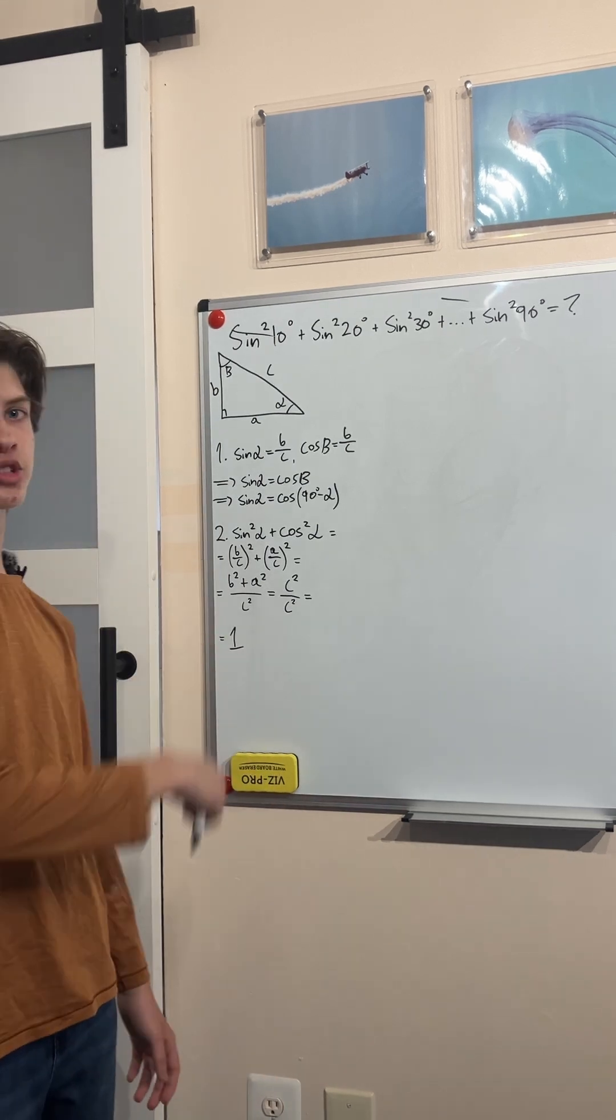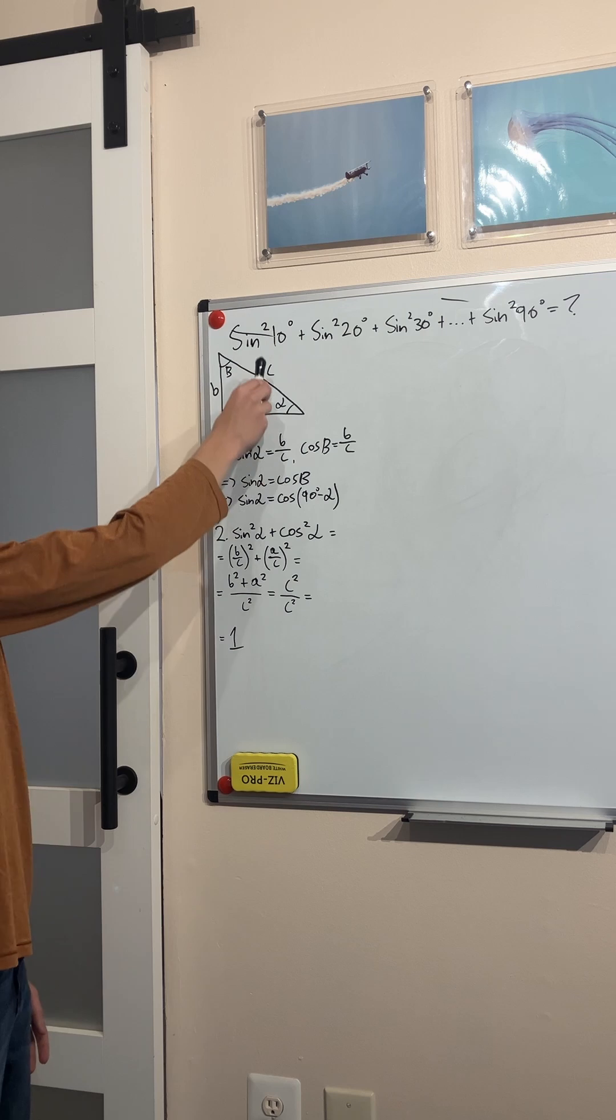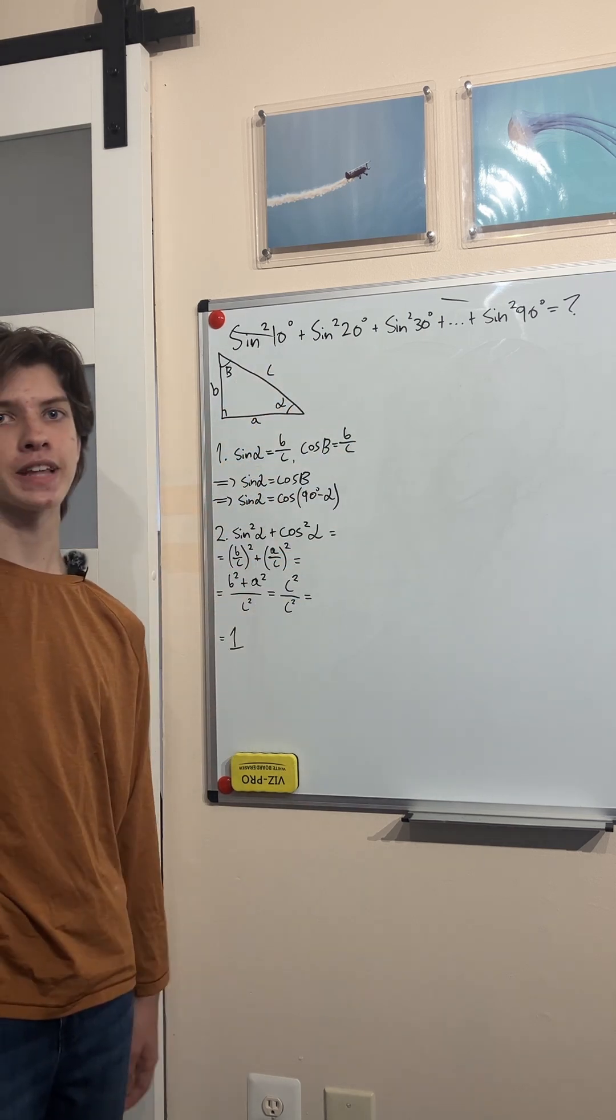Can you solve this Olympiad trigonometry problem? We have the sum of consecutive sine squared: sine squared of 10 degrees plus 20 plus 30, and so on, until sine squared of 90 degrees.